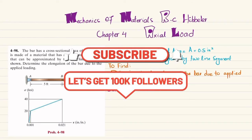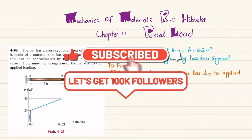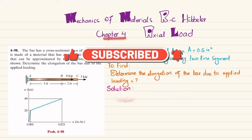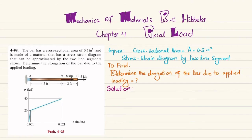Welcome back. Problem 4-98 is taken from Chapter 4, Axial Load, from the book Mechanics of Material by RC Hibbeler. The statement is: the bar has a cross-sectional area of 0.5 square inch and is made up of a material that has a stress-strain diagram that can be approximated by two line segments shown.